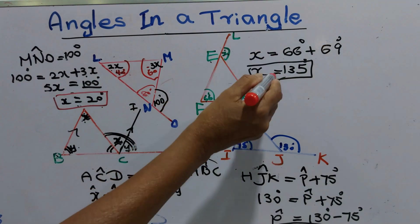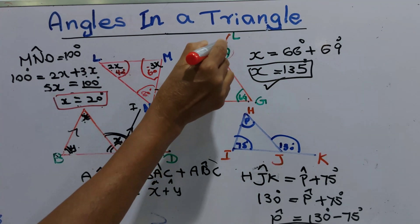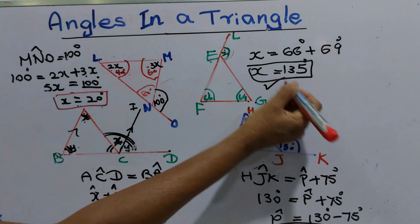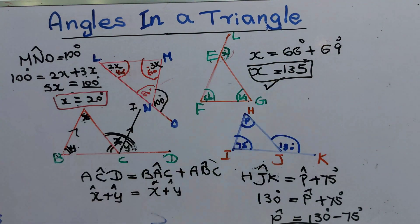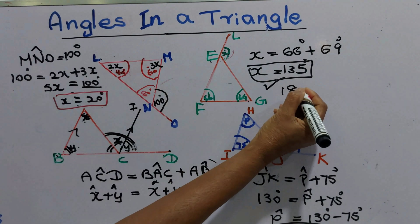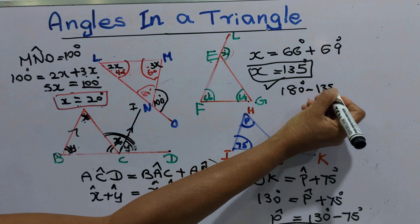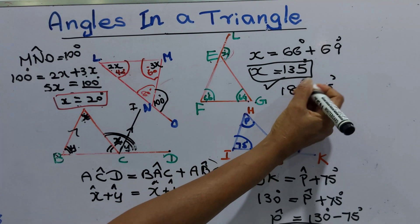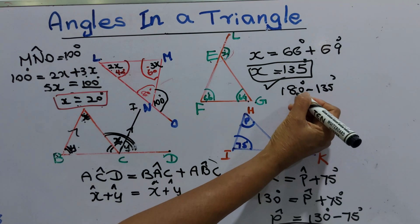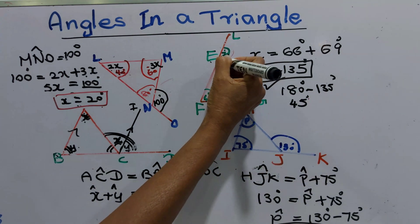This X we found as 135 degrees. This is a straight angle. So we can find this angle: 180 degrees minus 135 degrees equals 45 degrees. When these three angles are added together, they give 180 degrees.